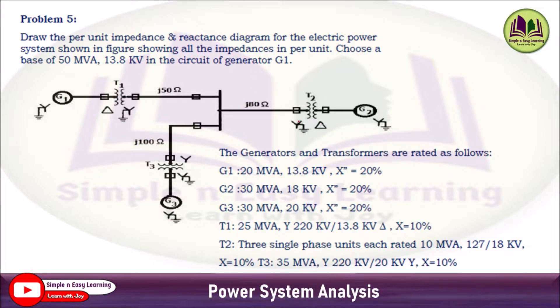The generators and transformers are rated as follows. Generator G1: 20 MVA, 13.8 kV, reactance 20%. Generator G2: 30 MVA, 18 kV, x = 20%. G3: 30 MVA, 20 kV, x = 20%.